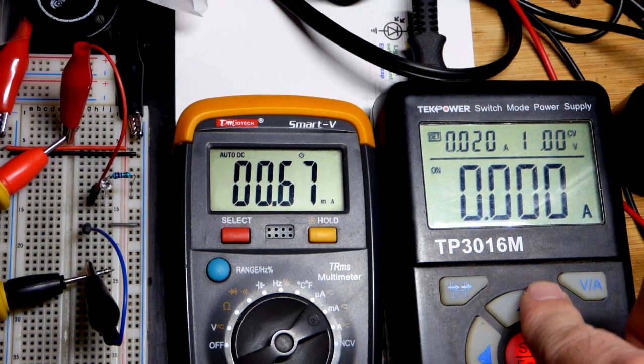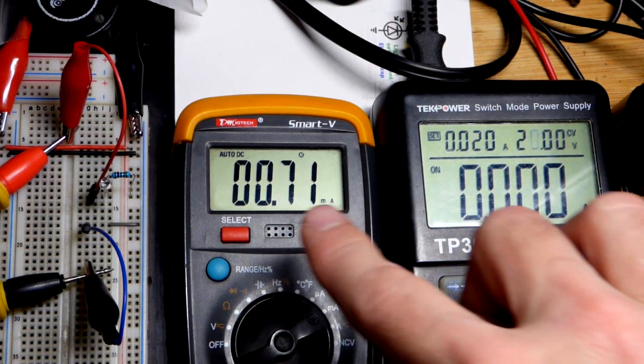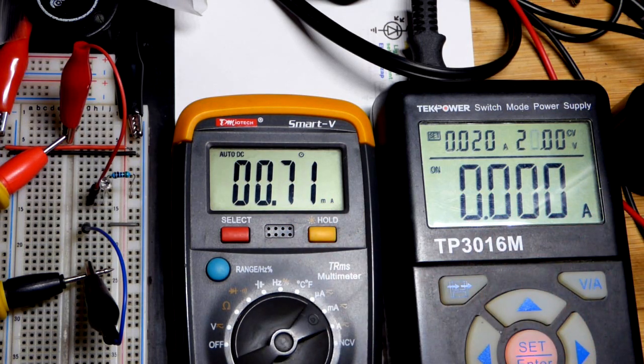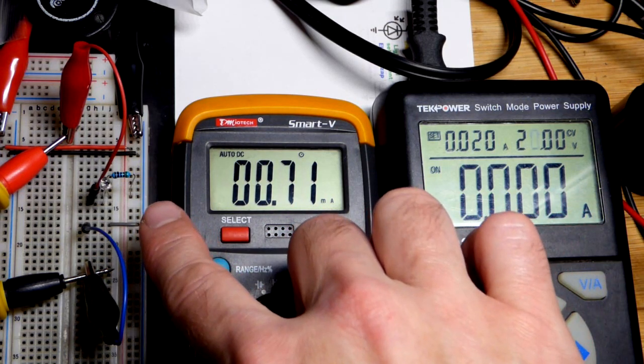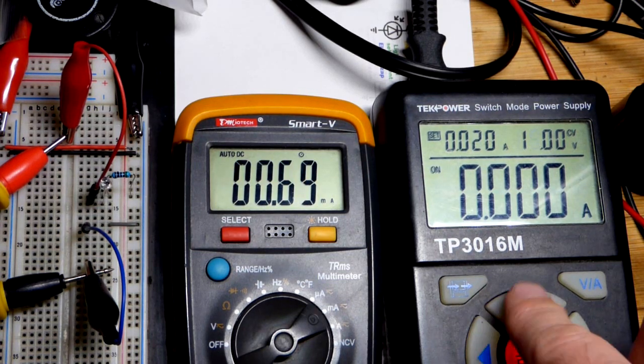We're going to go to 20 volts because I know it's less than one milliamp of current, so we're not going to overheat the 510 ohm resistor or the light dependent resistor here. With a flashlight I could get a lot more current.